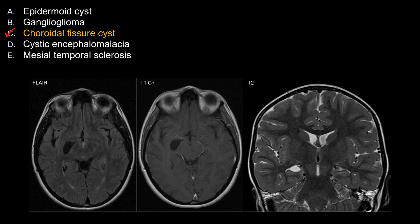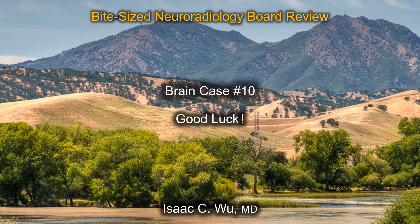So the best answer here is choroidal fissure cyst. It is important to recognize, because you don't want to mistake it for a more concerning lesion such as a neoplasm, leading to unnecessary follow-up or, worse, an unnecessary biopsy. That's all for brain case number 10. Good luck on your board exam. Thank you.